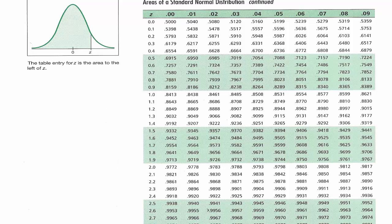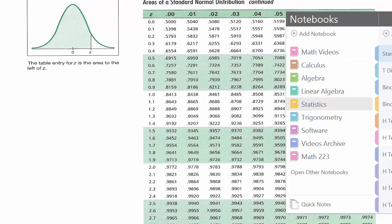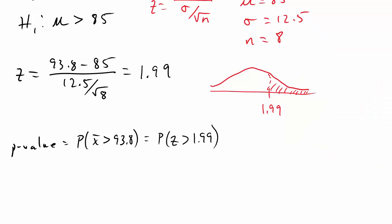Let's go back to our problem. This is equal to one minus 0.9767, and that gives us 0.0233. Now let's compare this value to alpha.